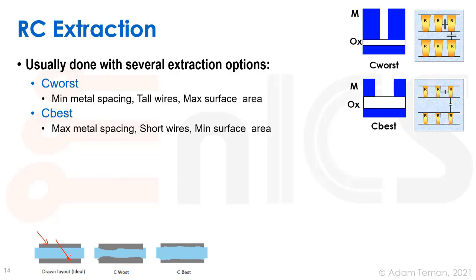Looking at two metal layers with a dielectric in between, they provide a coupling capacitance. Due to manufacturing variation, the wires can come out differently — for example, widened and closer together, giving much higher capacitance. This is called a C-worst corner. If the wires are thinner, there's a bigger distance between them and lower capacitance — this is C-best. C-worst means minimum metal spacing, tall wires, and maximum surface area; C-best means maximum metal spacing, short wires, and minimum surface area.